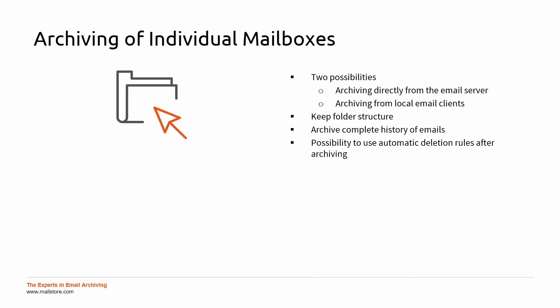The second method offered by MailStore involves archiving user mailboxes. When this method is used, all email from specific user mailboxes is archived. This can be achieved through direct access to the email server or, if that is not possible, by archiving the email client. The advantage here is the ability to keep the specified folder structure, in addition to archiving the complete history of the email in the user's mailbox.